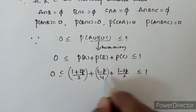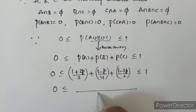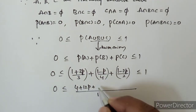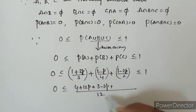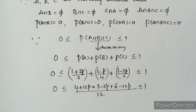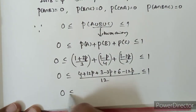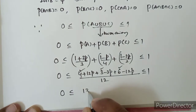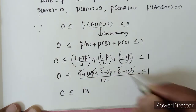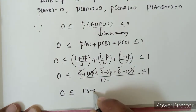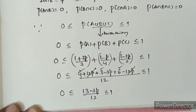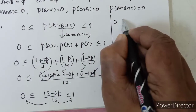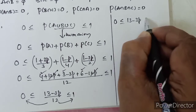Taking LCM of 12: 0 ≤ [4(1+3p) + 3(1-p) + 6(1-2p)] / 12 ≤ 1. Expanding: 4 + 12p + 3 - 3p + 6 - 12p = 13 - 3p. So 0 ≤ (13-3p)/12 ≤ 1, which gives 0 ≤ 13 - 3p ≤ 12.